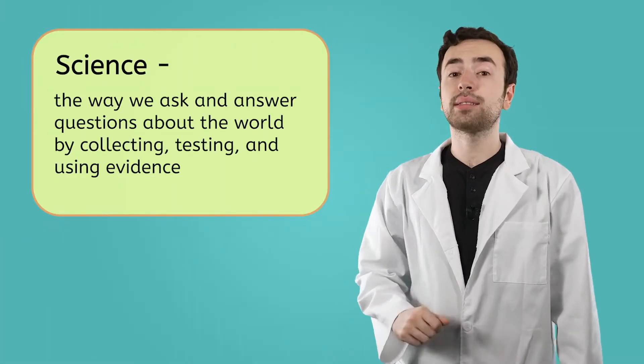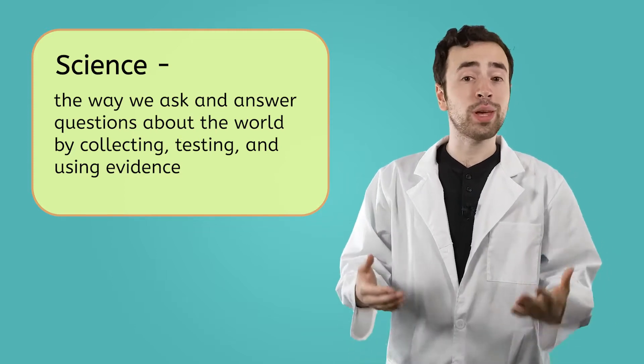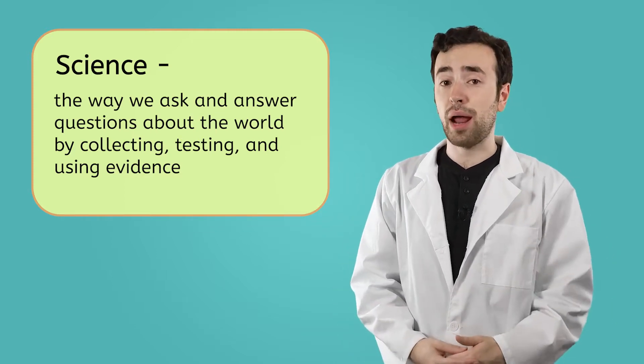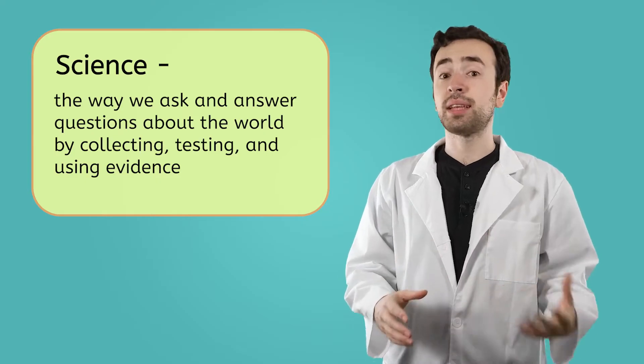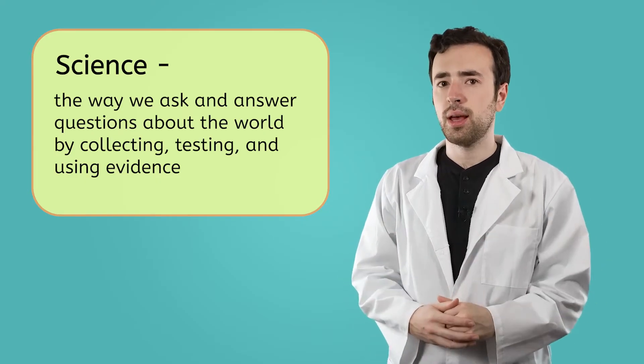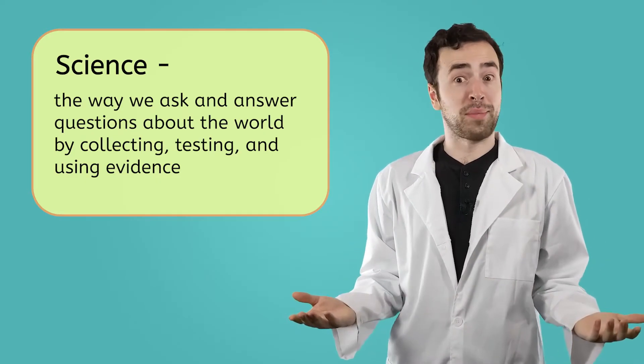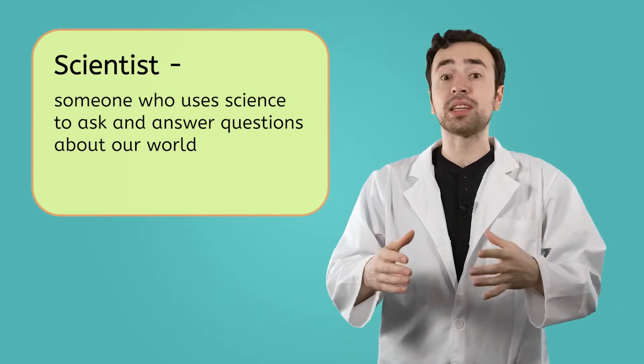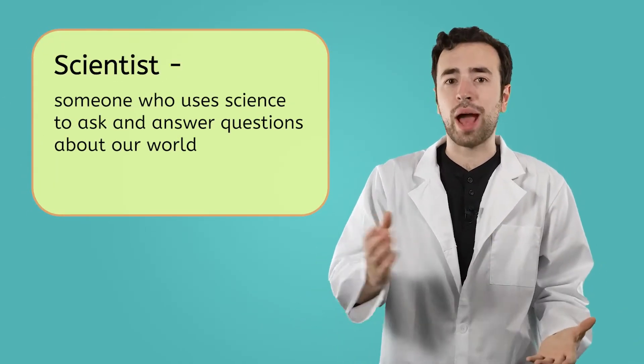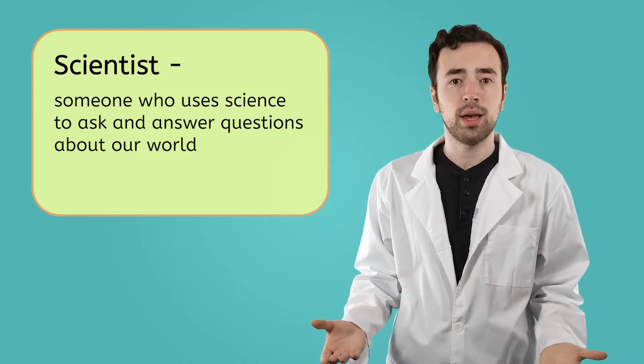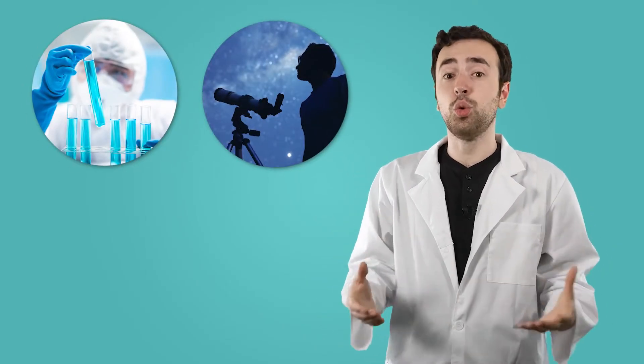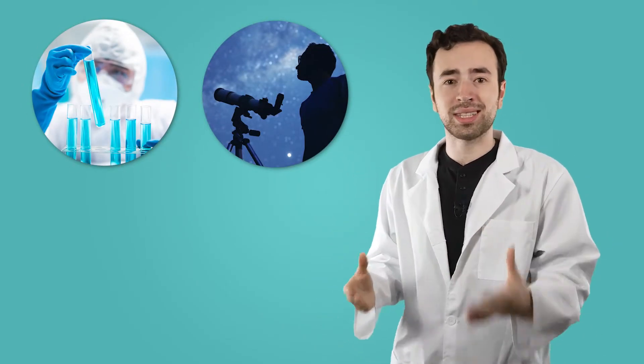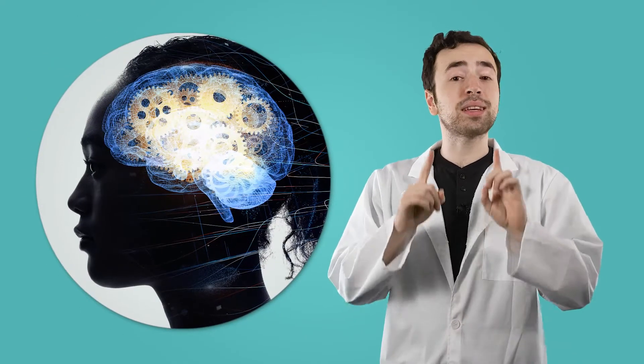In our last lesson, we learned that science is the way we ask and answer questions about our world by collecting, testing, and using evidence. So what does that make a scientist? A scientist is someone who uses science to ask and answer these types of questions. Notice how that definition does not mention bubbling beakers or fancy telescopes. These tools aren't what make someone a scientist.